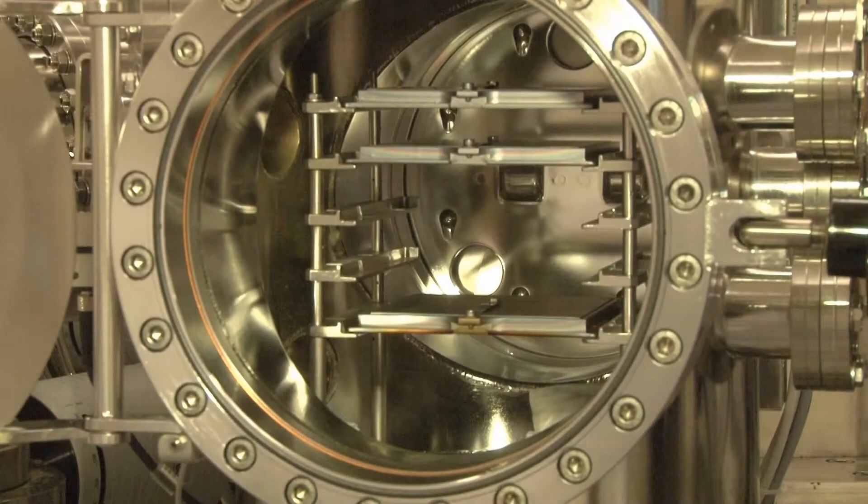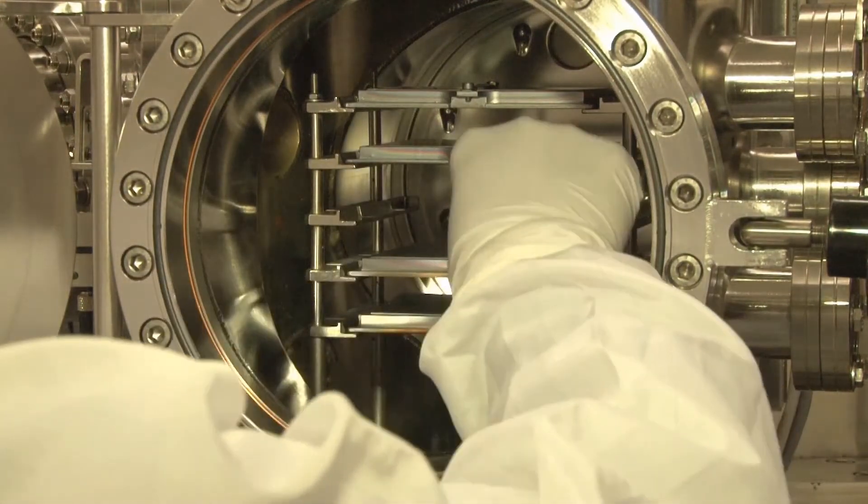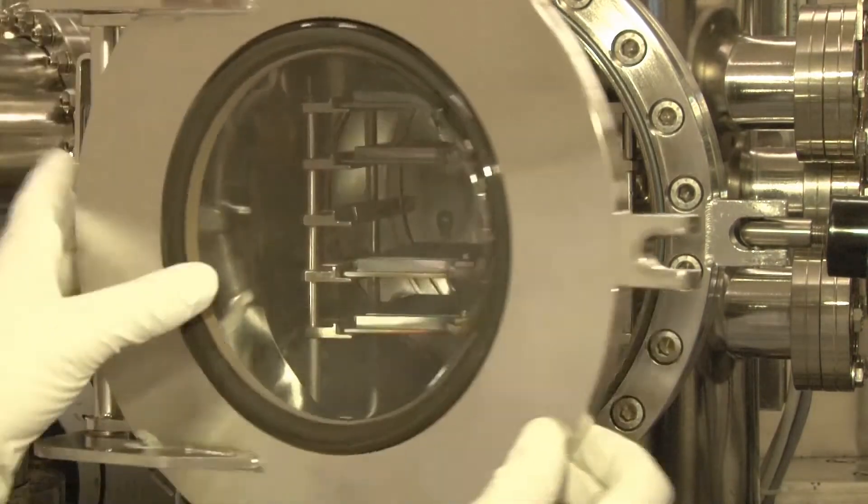Again, we use a load lock. The load lock allows access to the various chambers. Every chamber is dedicated to deposit a type of silicon layer. P-type silicon carbide, intrinsic amorphous or nano-crystalline silicon and N-doped amorphous silicon or N-doped nano-crystalline silicon.